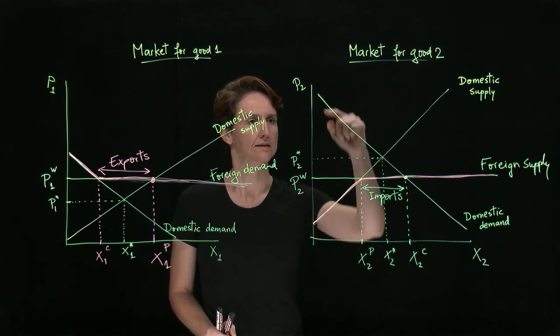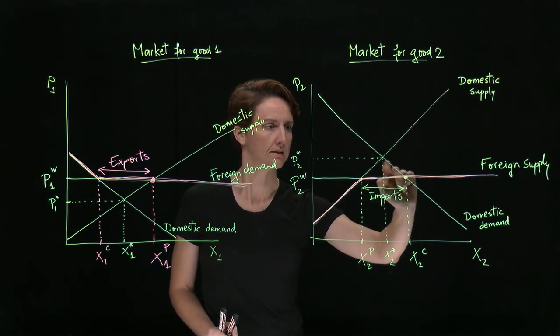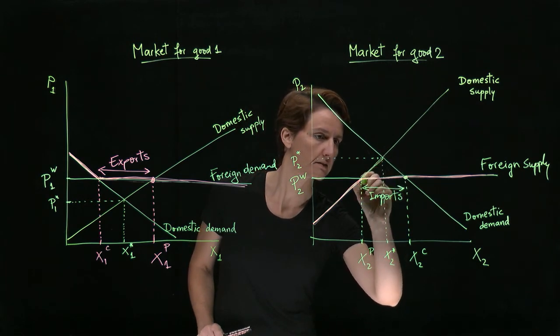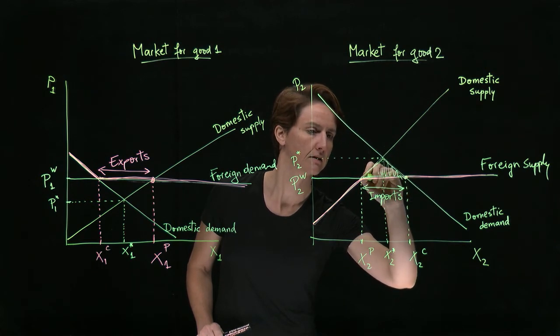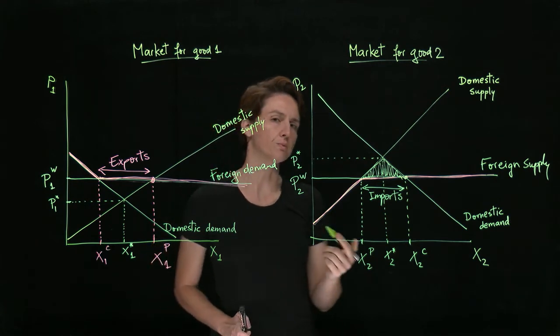So it consists of the before trade total surplus plus this area. So this area is the gain in total surplus from opening up to trade.